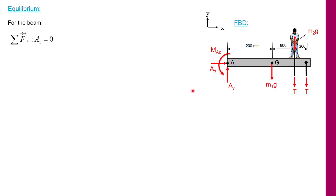If I now look at sum of the forces in the y direction and take upwards as my positive reference, I have Ay acting upwards, m1 times g acting downwards so negative, m2 times g acting downwards so negative, and then 2T forces acting downwards.